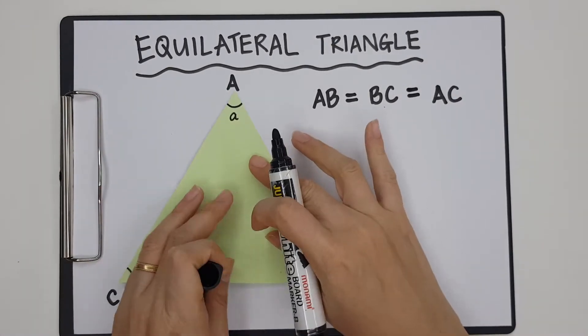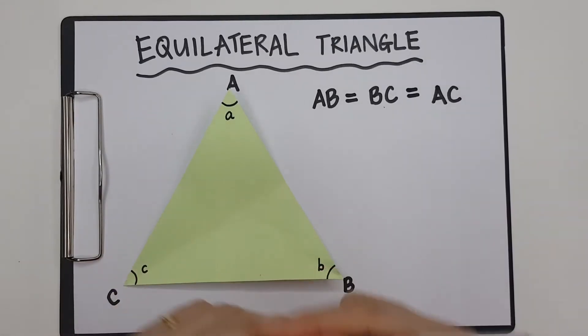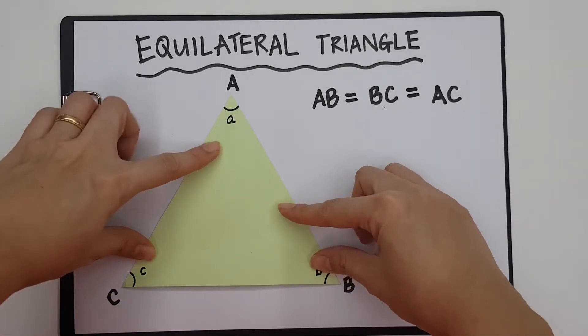So this is the first property of an equilateral triangle. All sides are the same length.